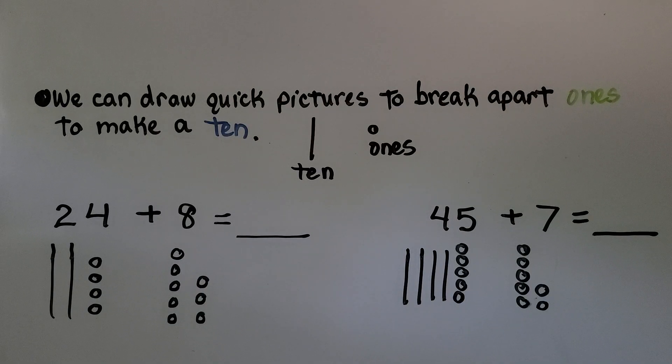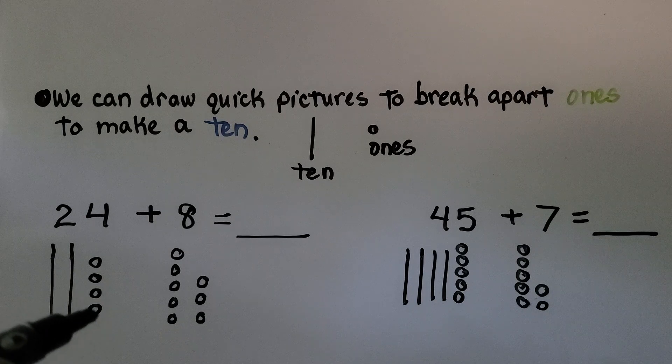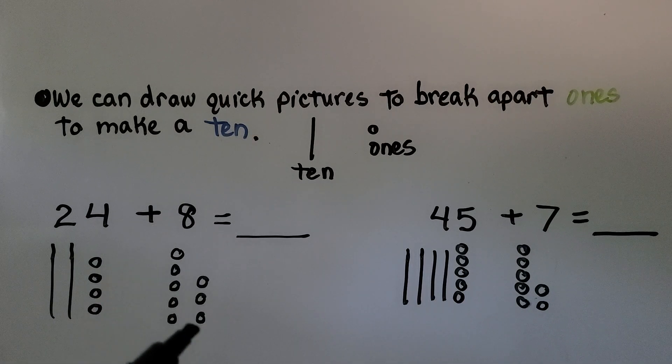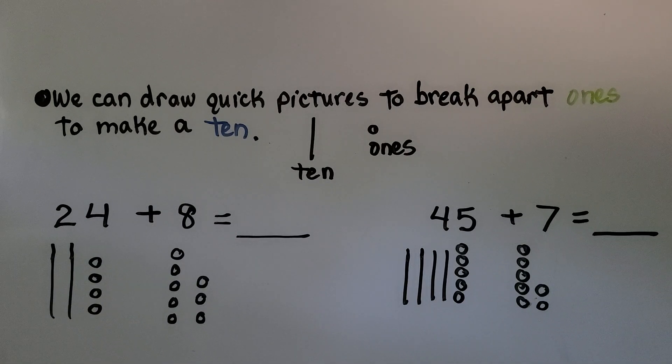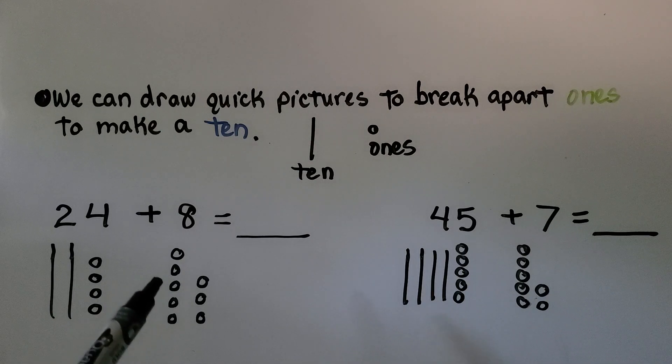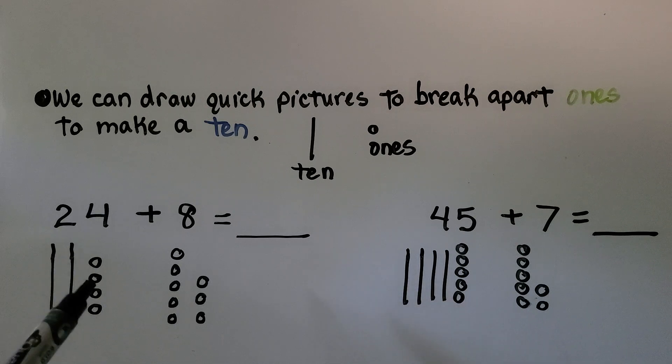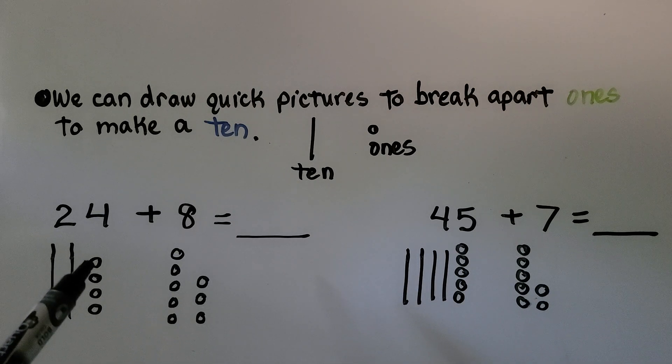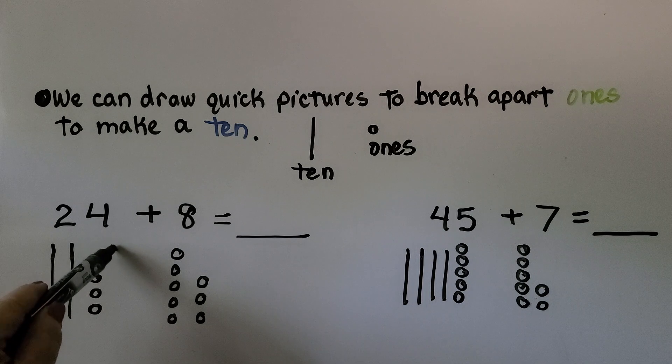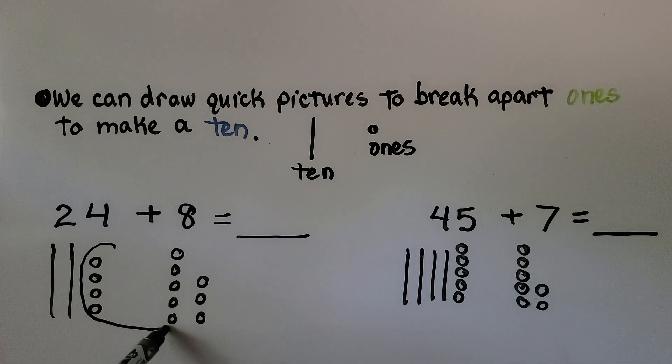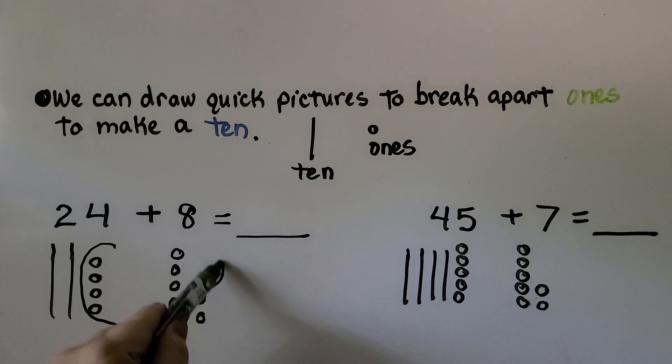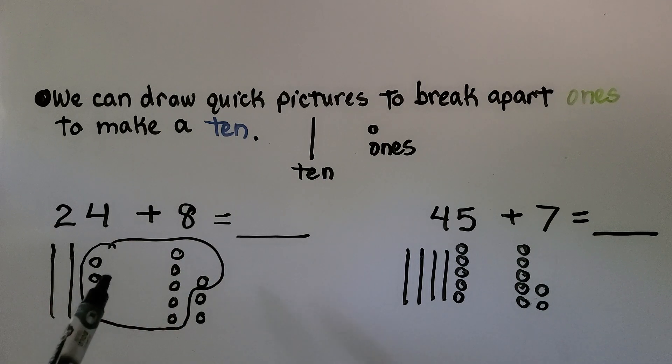We can draw quick pictures to break apart ones to make a ten. We make a line for tens and a little circle for the ones. We have 24 plus 8. We make 2 lines for the 2 tens, 4 little circles for the 4 ones. We're adding 8, so we make 8 little circles. And we can make tens. This 4 needs 6 more to be a ten. So we can group it like that.